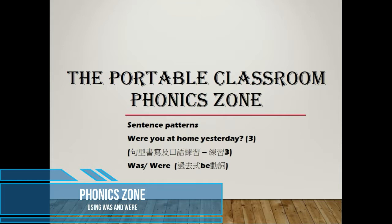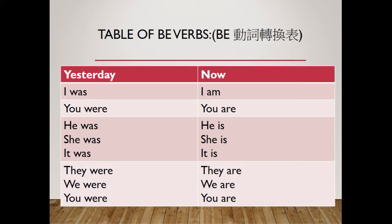First, let's talk about the be verbs of the past tense. We know that in the present tense there are three be verbs: they are 'am', 'are', and 'is'. In the past tense, we change 'is' and 'am' into 'was', and we turn 'are' into 'were'. So this is a table for the be verbs that we use with the present tense and the past tense.